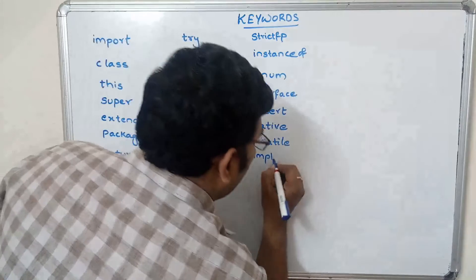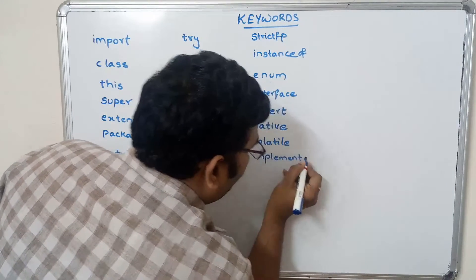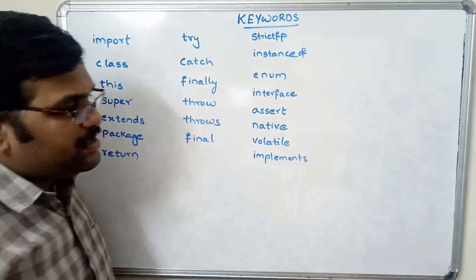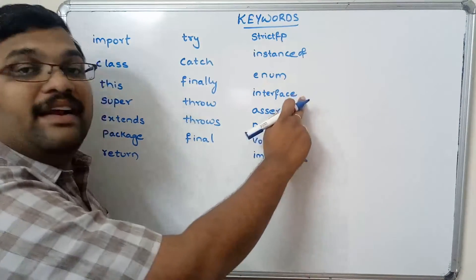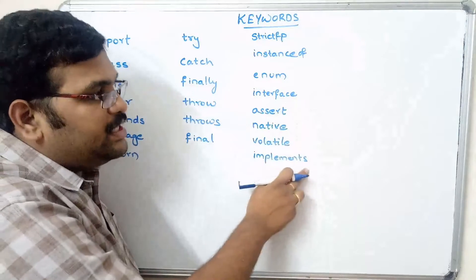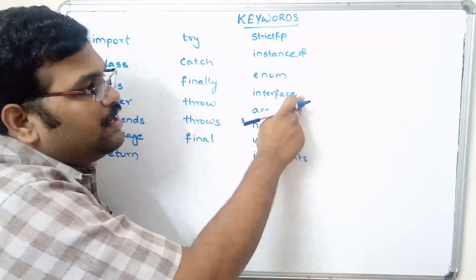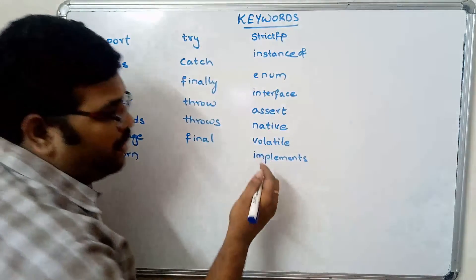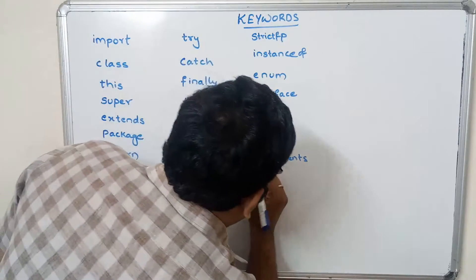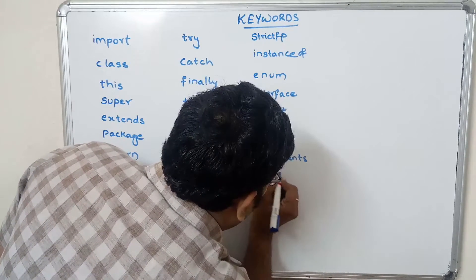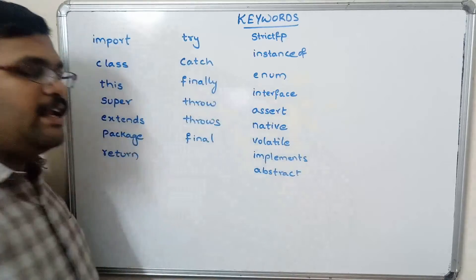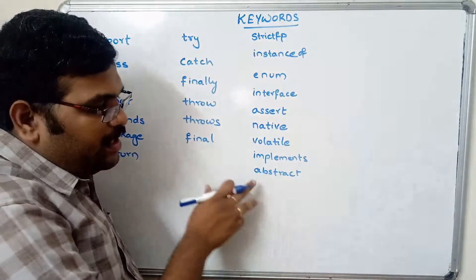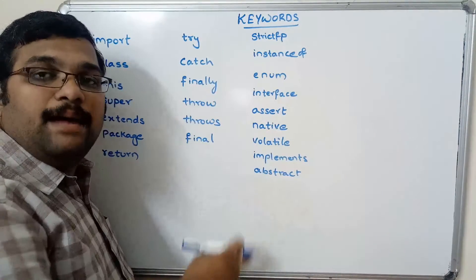The implements keyword is used to implement an interface — it is used for achieving multiple inheritance. The abstract keyword is used in declaring a method; in the declaration of a method we use this abstract keyword.